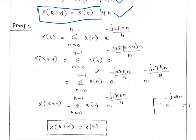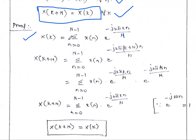Now we are going to prove this statement. As per the definition of DFT, the DFT formula is: capital X(k) = summation from n = 0 to N−1 of X(n) · e^(−j2πkn/N), for k ranging from 0 to N−1. This is the DFT formula. Our aim is to prove that X(k) = X(k + N).